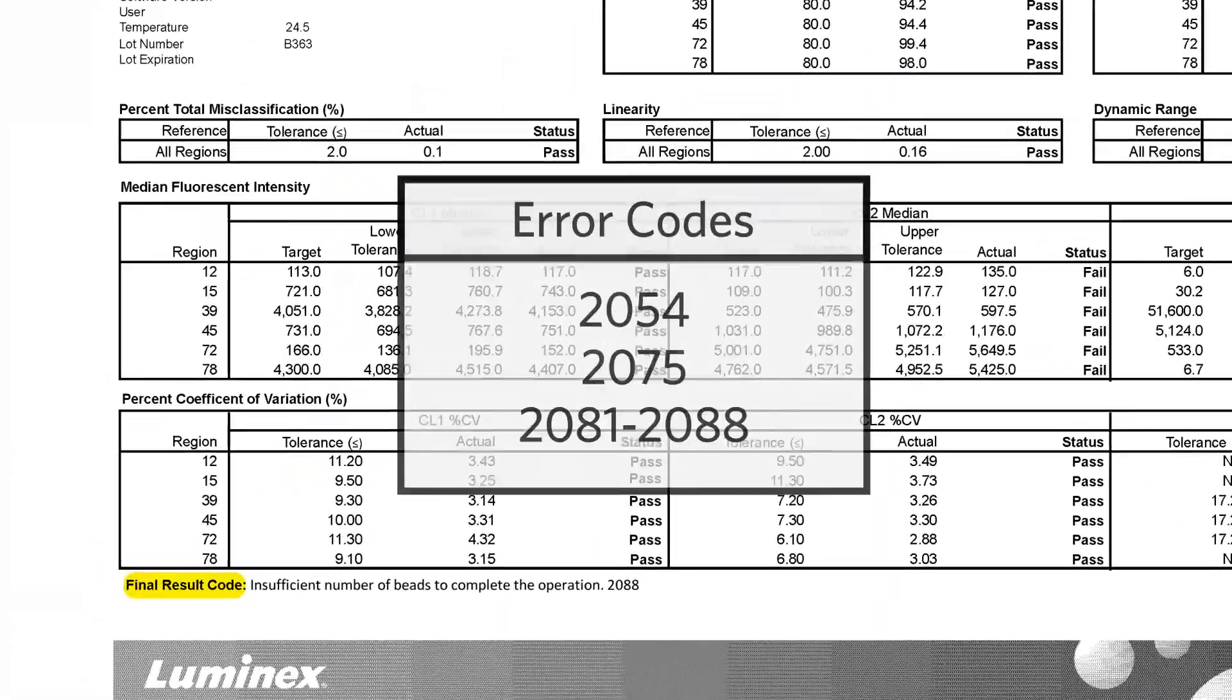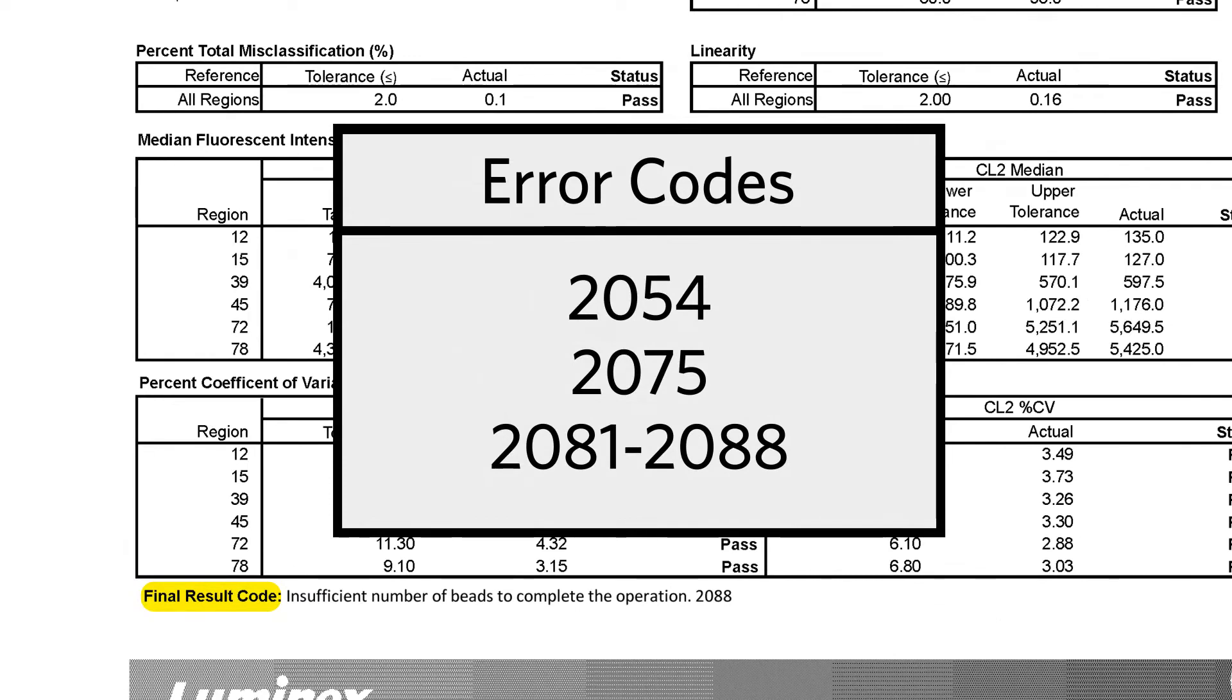Look for errors 2054, 2075, or 2081 through 2088. Often, when these errors are found in the Calibration and Performance Verification report, it indicates a probe issue.